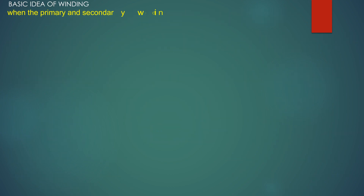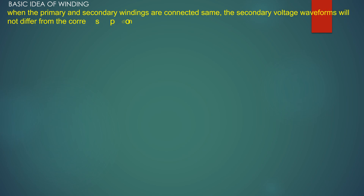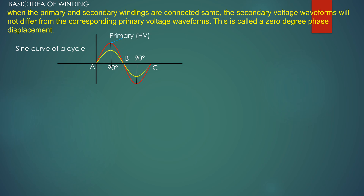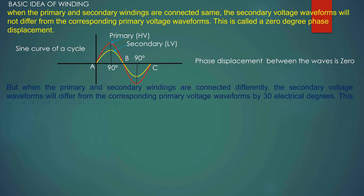When the primary and secondary windings are connected the same way, the secondary voltage waveforms will not differ from the corresponding primary voltage waveforms. This is called zero-degree phase displacement. But when the primary and secondary windings are connected differently, the secondary voltage waveforms will differ from the corresponding primary voltage waveforms by 30 electrical degrees. This is called a 30-degree phase displacement.